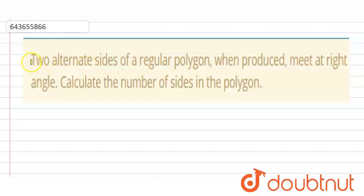Now we are given that two alternate sides of a regular polygon, when produced, meet at right angle.